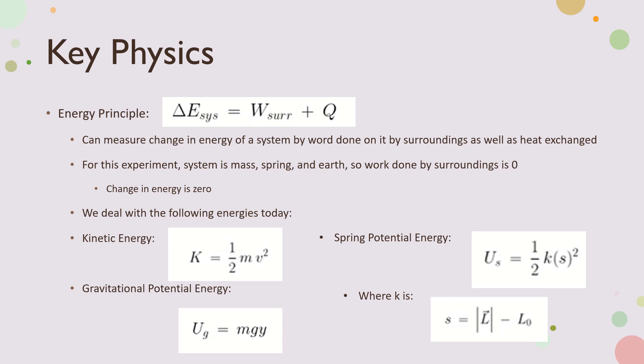We also deal with the following energies today. We have kinetic energy is one-half m change in velocity squared, or final velocity squared minus initial velocity squared. Gravitational potential energy is the mass of the object times g times the change in distance in the y direction. The spring potential is one-half ks squared, where s is the magnitude of the length of the spring at any given moment minus the relaxed length of the spring, and k is the spring constant.